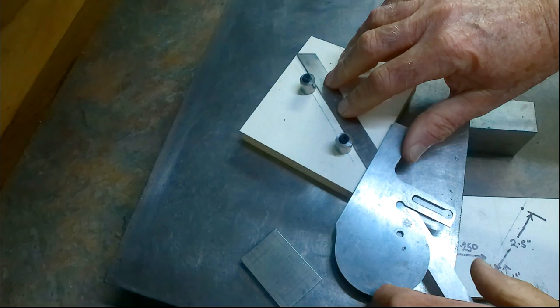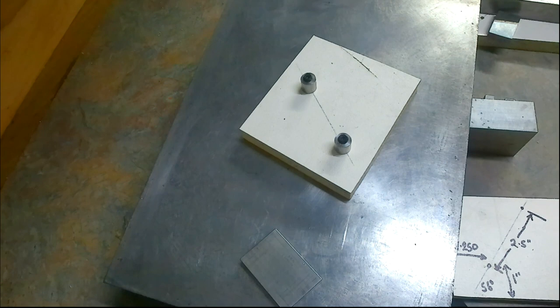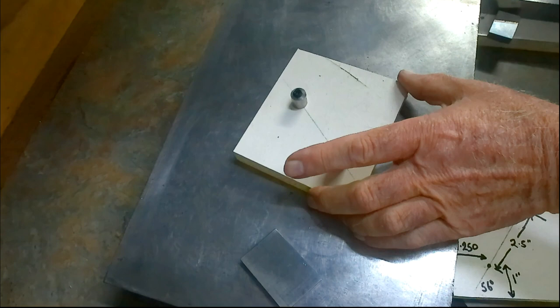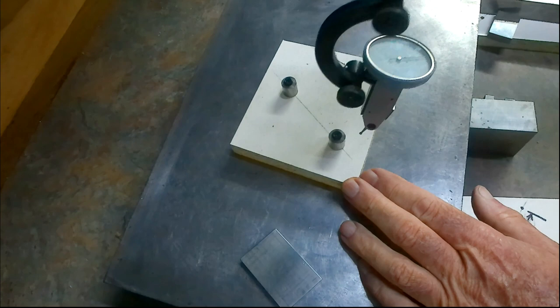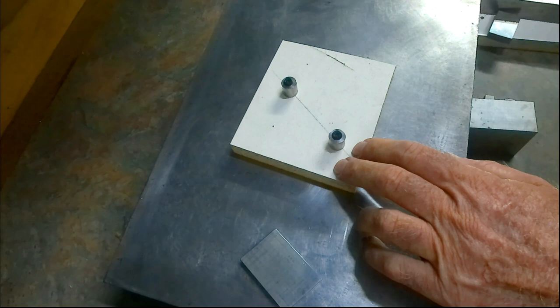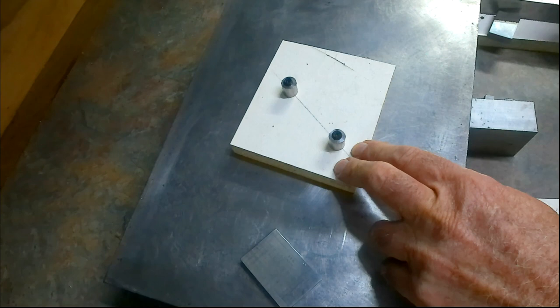The next procedure then is you take it over to your manual milling machine and clamp it to the table, put it in the vice whatever, and then with the aid of your centering clock you can center the part up. When you're happy with that, remove the screw and the toolmaker's button and you're ready to proceed.